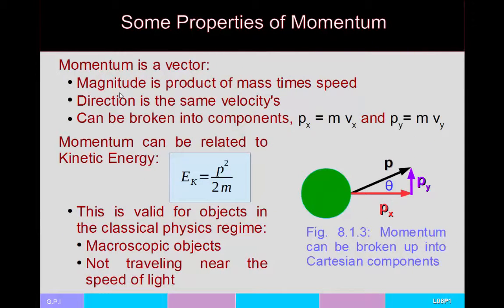Let's look at a few basic properties of momentum. It is a vector quantity — there's a magnitude, which is the product of mass times speed, and also a direction, which is the same direction as the velocity itself. If you have multiple objects moving, the momentum of the system is basically the sum of the momenta of the individual objects, and is also equal to the center of mass momentum — which can be thought of as a mass-weighted average of the velocities. Because momentum is a vector, it can be broken into components: px, py, and pz in 3D.